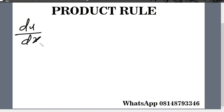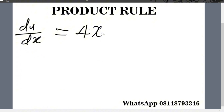Now let's find du over dx. du over dx equals: if you differentiate 2x squared with respect to x it gives you 4x, and if you differentiate 5x with respect to x it gives you 5.